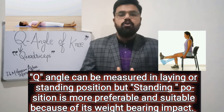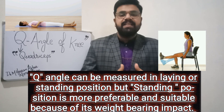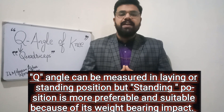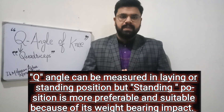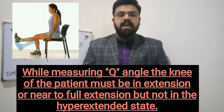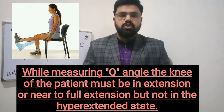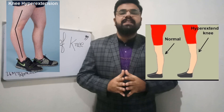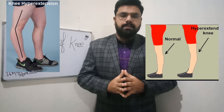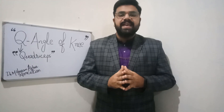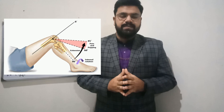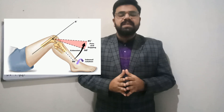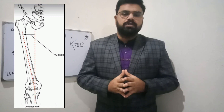The Q angle can be measured in the lying or standing position, but the standing position is more preferable and suitable because of its weight-bearing impact. While measuring the Q angle, the patient's knee must be in the extended position or near full extension, but must not be in a hyperextended state. To a lesser extent, it can also be measured when the knee is 90 degrees flexed.